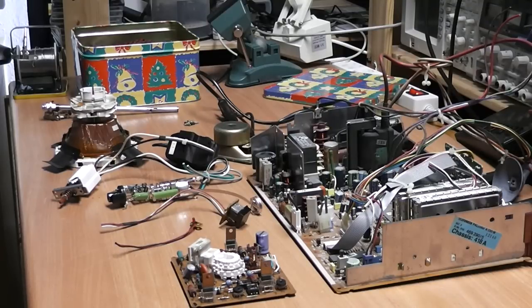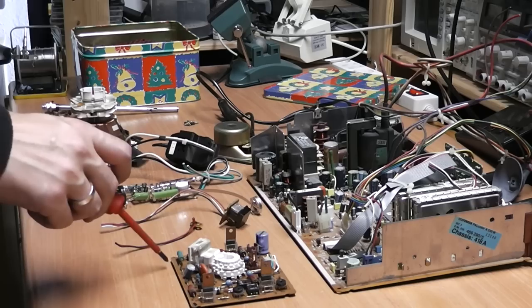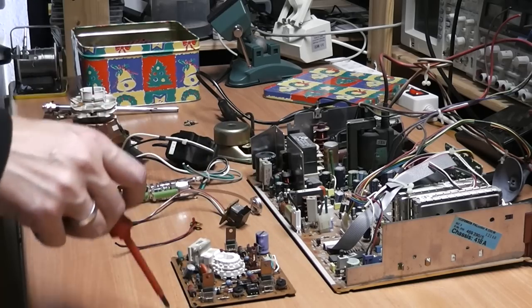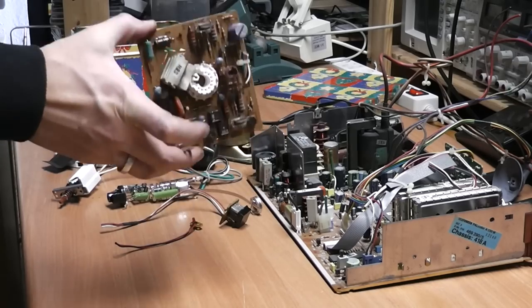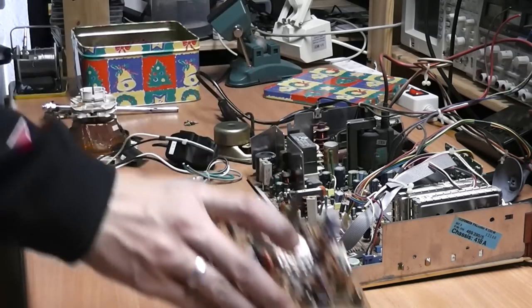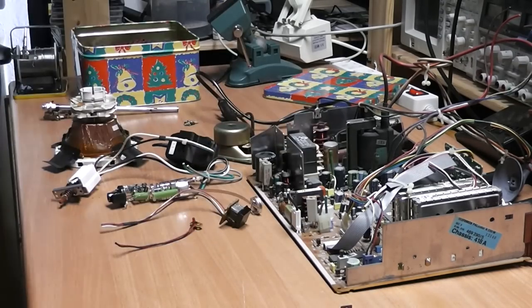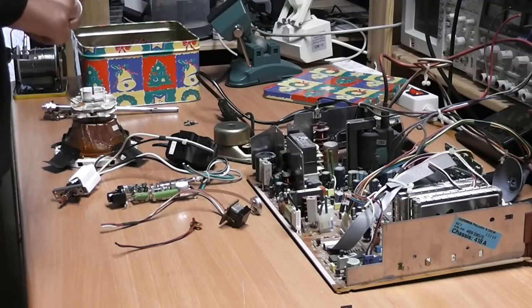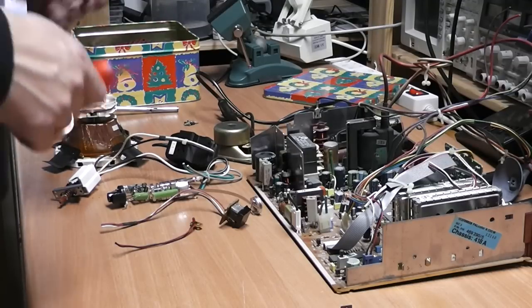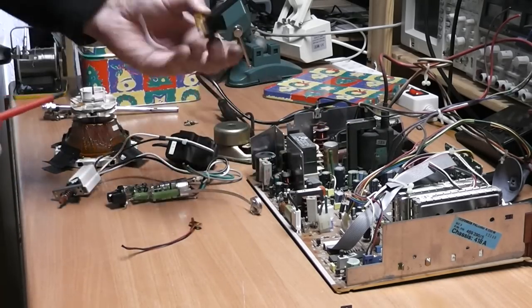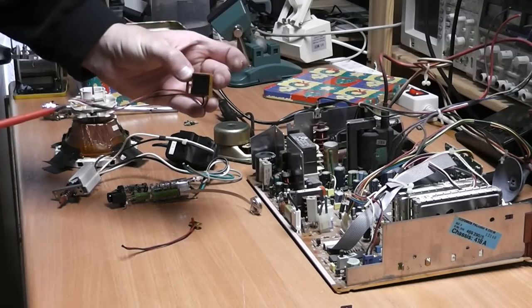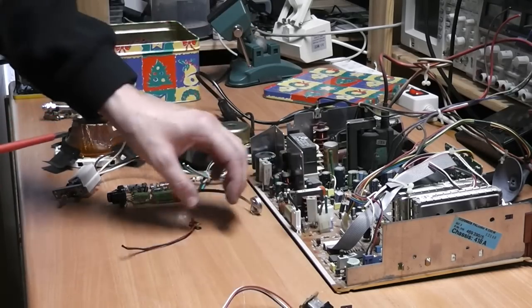So here is a brief overview over the parts that we got. Here is a small PCB that was connected directly to the CRT. We are going to have a closer look at that. The main PCB of the CRT, which includes the flyback and some transistors. Here is an infrared decoding unit that was in the front. A LED.